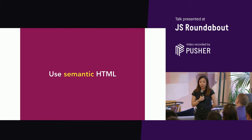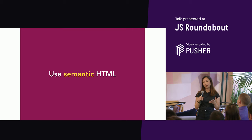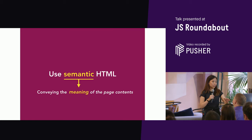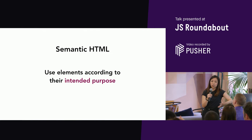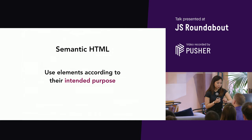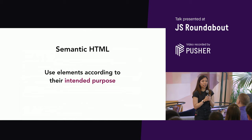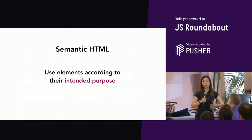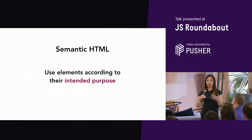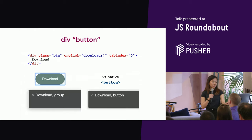Use semantic HTML. It's really hard to talk about accessibility without talking about semantic HTML because it's so core to it. Semantic means meaning, and in the context of the web it's about conveying the meaning of the page contents. The first point is to use elements according to their intended purpose. When you do, all the behaviors are already built in — you don't have to add focus or keyboard interactions via JavaScript. So if you're building a button, use a native button.